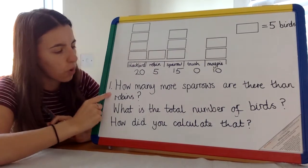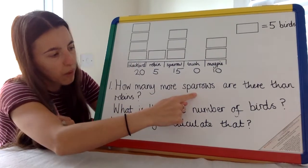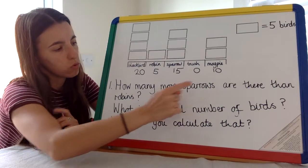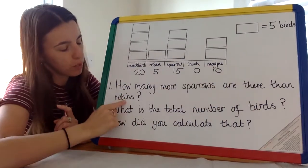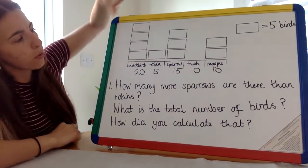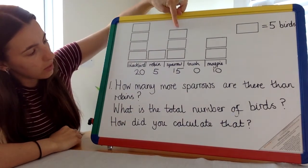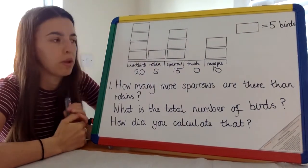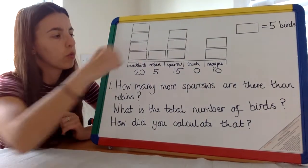Question one: How many more sparrows are there than robins? It's telling us there are more sparrows than robins. We can see that. This is the sparrow and this is robin. We can see that there are more sparrows than robins, but how many more?